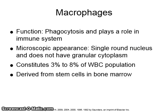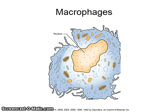The monocyte is the second type of white blood cell to emigrate from blood vessels into injured tissue, where it becomes a macrophage. Like neutrophils, monocytes are derived from stem cells in the bone marrow. The macrophage is mobile and capable of phagocytosis. It has a single round nucleus and does not have granular cytoplasm. It constitutes 3–8% of the white blood cell population. See figure 2-12 on page 40 of your textbook for more information.